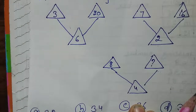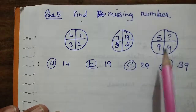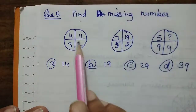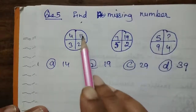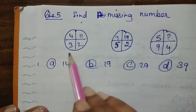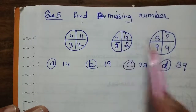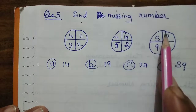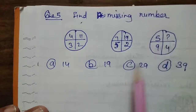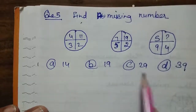Try to solve this question. And one more question assigned to you — question number 5: find the missing number. In this figure, 4, 11, 3, 2 is given; 7, 5, 2, 19 is given; and third: 5, 9, 4 is given and you have to find the missing number. The given options are 14, 19, 29, and 39.